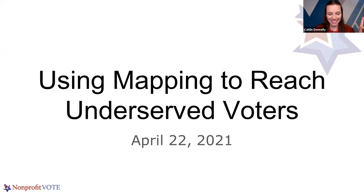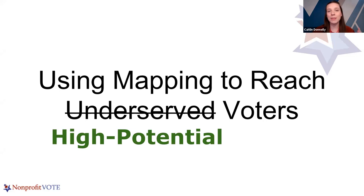Correction! We're going to talk about using mapping to reach high potential voters. We are switching up some of our language and framing starting right now, because identity precedes action. So instead of reinforcing the behaviors we don't want — not turning out to vote — by calling people non-voters or low propensity voters, we're going to start calling them high potential voters.